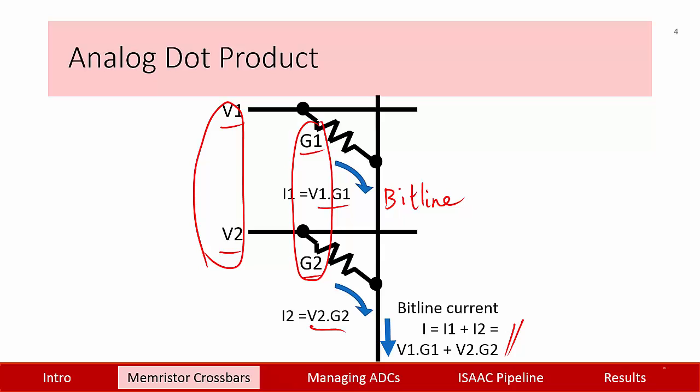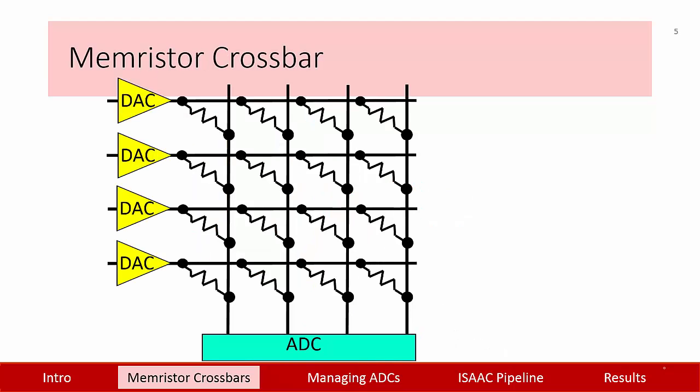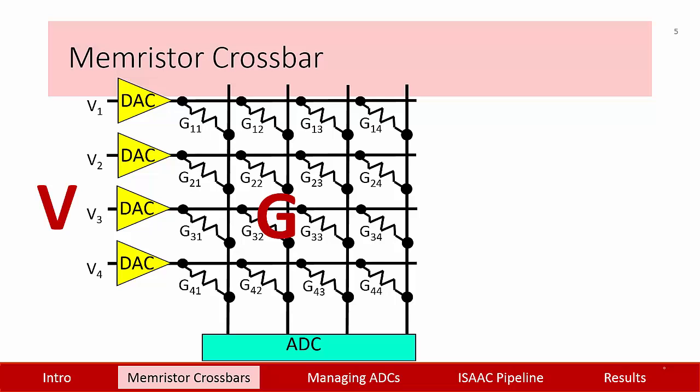I can extend this concept further and create this dense grid of resistances. I can program the resistances beforehand, giving me this matrix of conductances G. Now when I apply a vector of voltages as input, the current in each vertical line or bit line is the dot product of the input voltage vector and the vector of resident conductances in that column. So the currents from the bit lines are the result of a vector matrix multiplication, which is the bulk of all computations in a deep neural network.